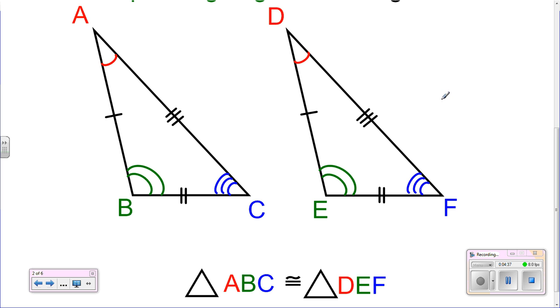So we know AB is congruent to DE. BC is congruent to EF, and AC is congruent to DF.